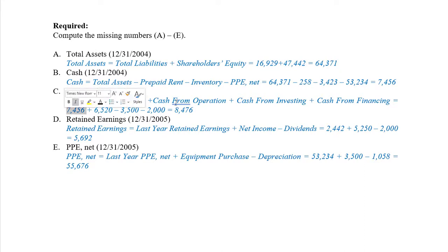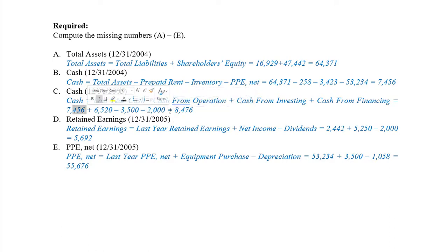The cash number we just calculated is from the beginning of the year. We then add cash from operations and subtract out cash from financing and investing to get the total. Because we had the cash from the beginning of the year, it gives us the total cash balance at the end of the year. These three numbers give us the change in cash, and adding the beginning balance gives us the total at the end.